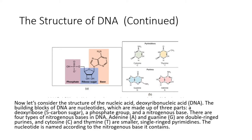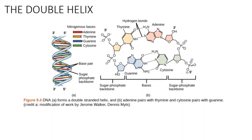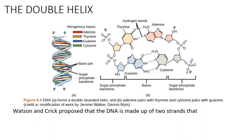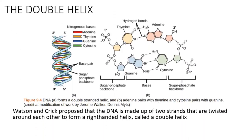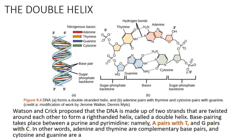The nucleotide is named according to the nitrogenous base it contains. Watson and Crick proposed that DNA is made up of two strands that are twisted around each other to form a right-handed helix, called a double helix. Base pairing takes place between a purine and pyrimidine — namely, A pairs with T, and G pairs with C.